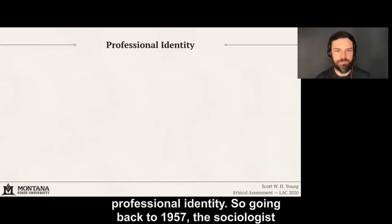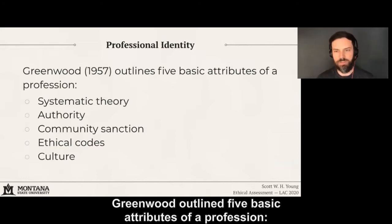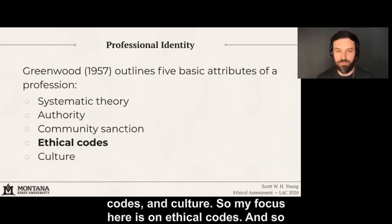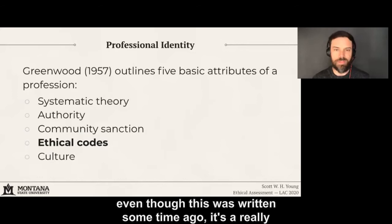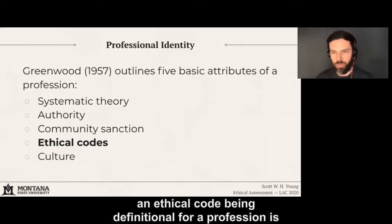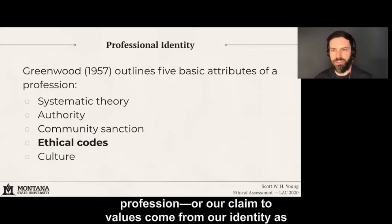Starting with professional identity: going back to 1957, the sociologist Greenwood outlined five basic attributes of a profession — systematic theory, authority, community sanction, ethical codes, and culture. My focus here is on ethical codes. Even though this was written some time ago, it's still relevant today. The idea of an ethical code being definitional for a profession is really important — our claim to values comes from our identity as a profession.